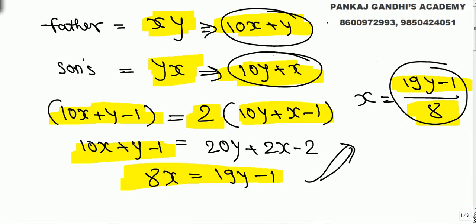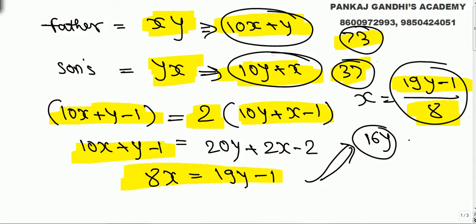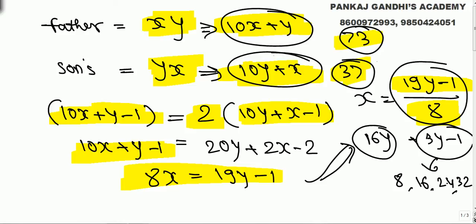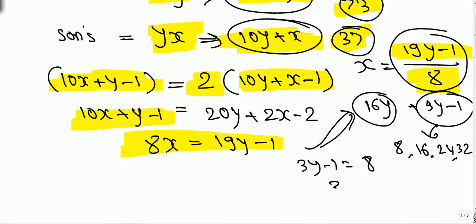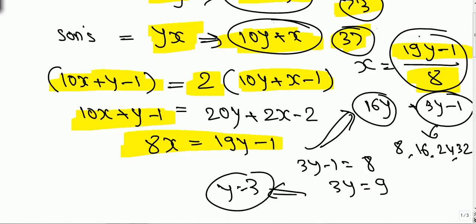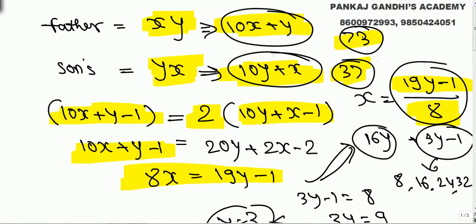To summarize: 19y - 1 must be divisible by 8. Since 16y is always divisible by 8, we need 3y - 1 to be divisible by 8 — it could be 8, 16, 24, or 32. Trying 3y - 1 = 8 gives y = 3, and substituting gives x = 7. Therefore, father's age is 73 and son's age is 37.